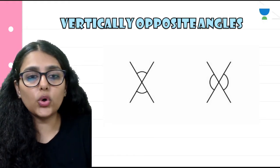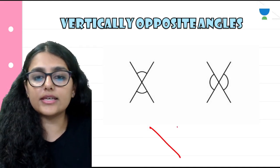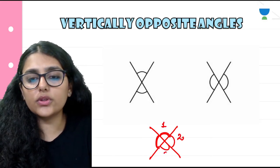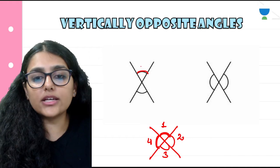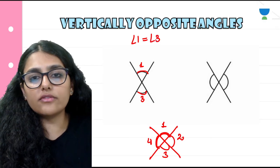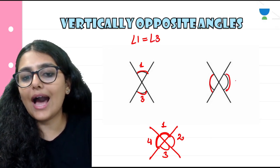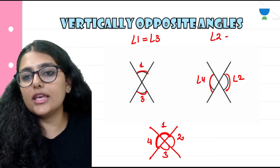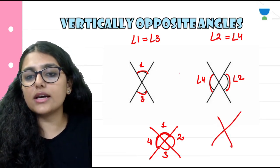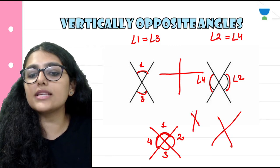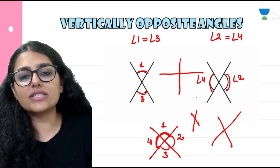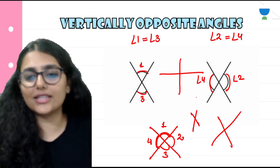When two lines or line segments intersect, four types of angles are formed — angle 1, 2, 3, and 4. The property is: angle 1 will be equal to angle 3, and angle 2 will be equal to angle 4, because opposite angles are vertically opposite. Always remember this property when solving questions where two lines are intersecting — the opposite angles will be equal to each other.